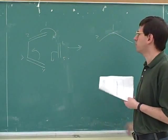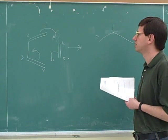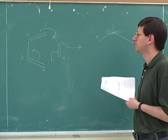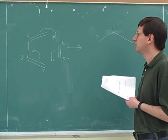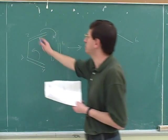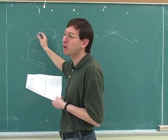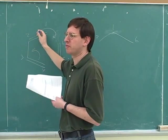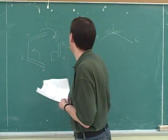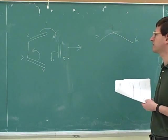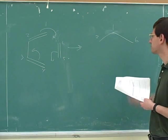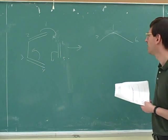How many bonds will there be between the one and the two? One. There used to be two, but we're breaking one of them — we're not breaking both of them, only one. How many bonds will there be between the one and the six? One. Good.